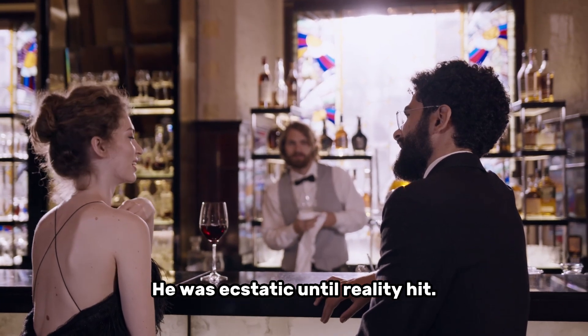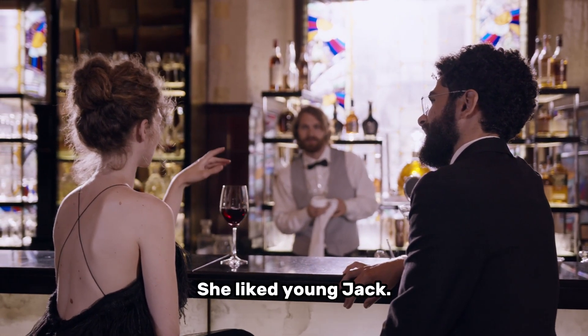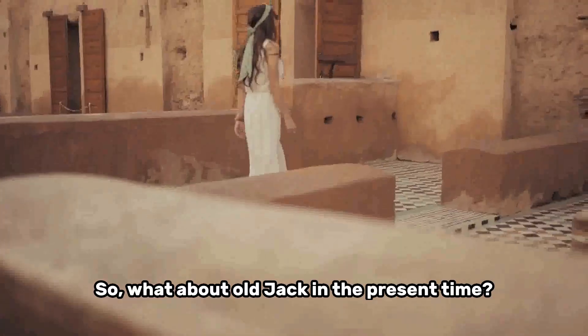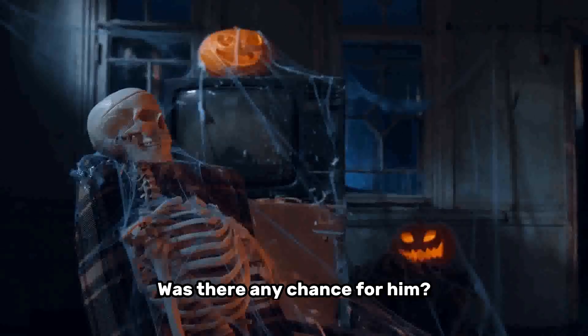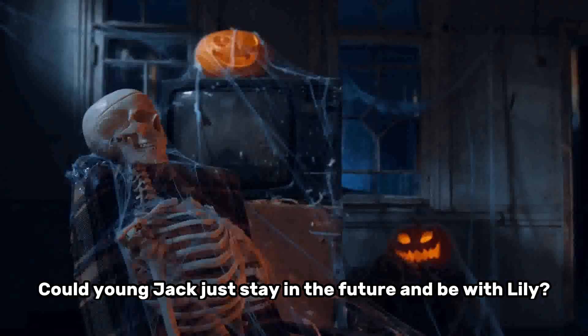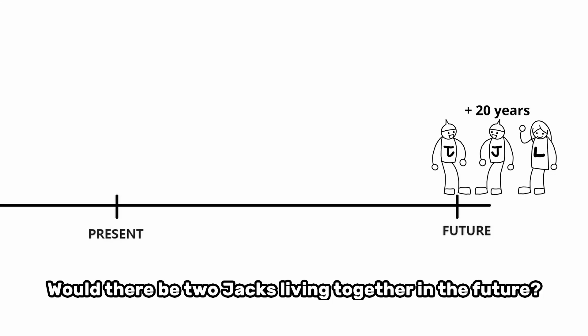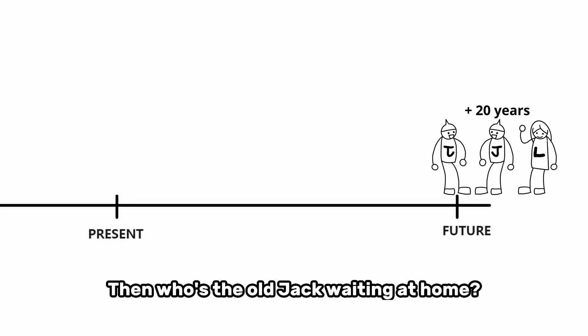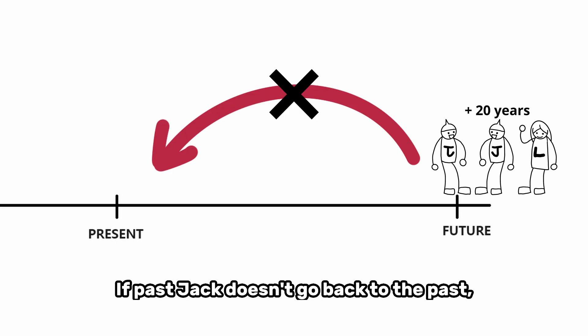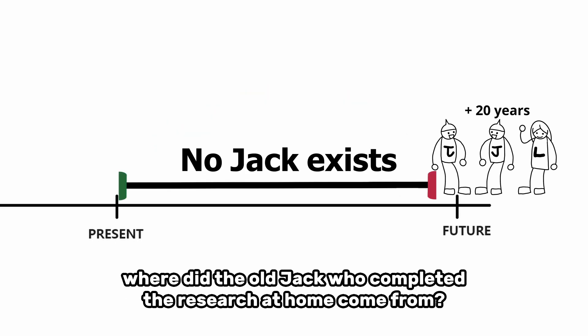Lily was into young Jack. He was ecstatic until reality hit. She liked young Jack. So, what about old Jack in the present time? Was there any chance for him? Could young Jack just stay in the future and be with Lily? Would there be two Jacks living together in the future? Then who's the old Jack waiting at home? If past Jack doesn't go back to the past, where did the old Jack who completed the research at home come from?